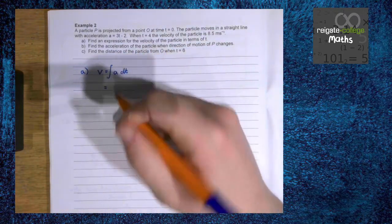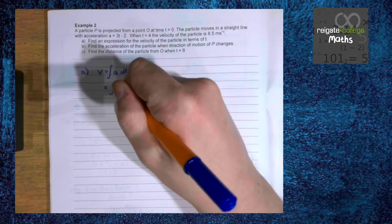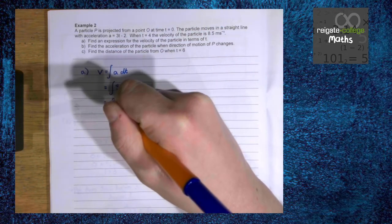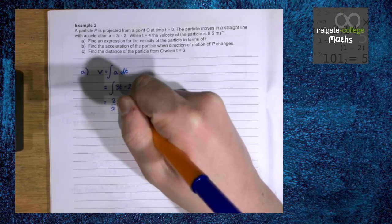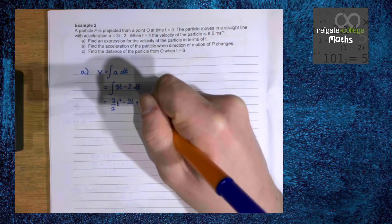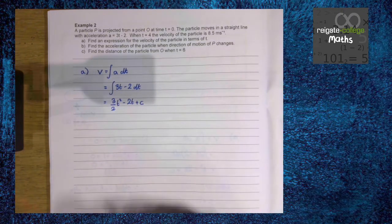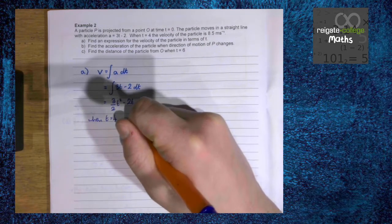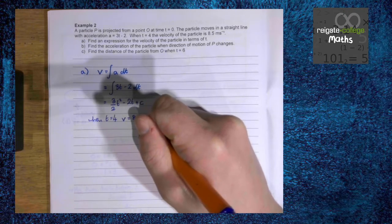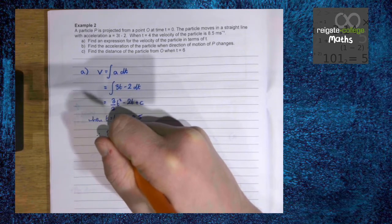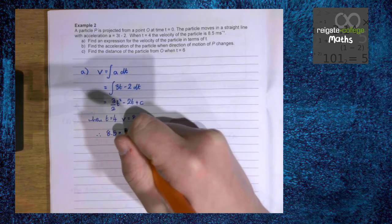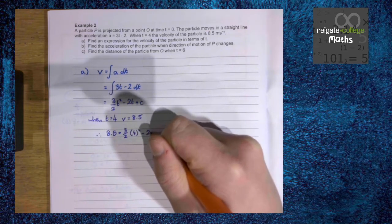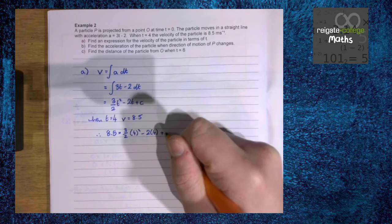So we are integrating 3t minus 2. Integrate normally, and we know that when t equals 4, v equals 8.5. So therefore, 8.5 equals 3 over 2 times 4 squared minus 2 times 4 plus c.